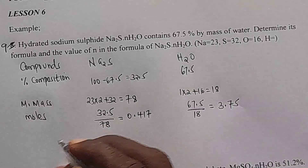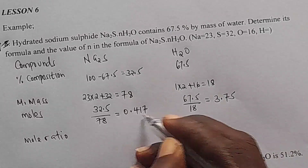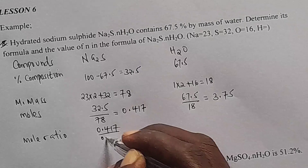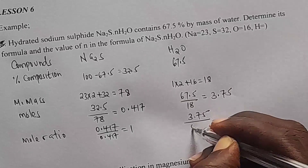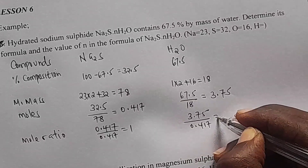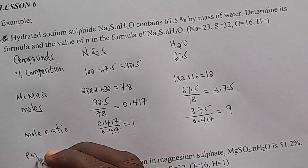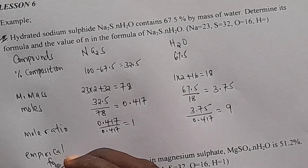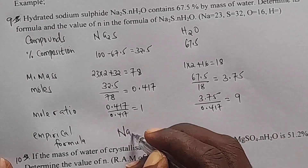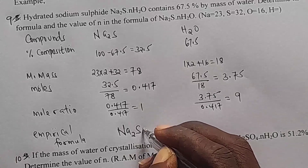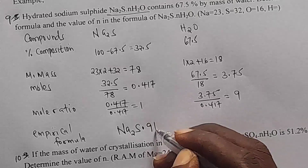Next we go and get mole ratio. The one with the least moles is 0.417. So 0.417 divided by 0.417 gives 1. Then 3.75 divided by 0.417 gives 9. So the empirical formula will be Na₂S·9H₂O.